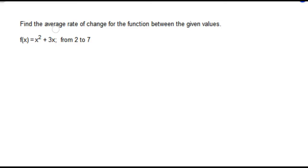On this question, we want to find the average rate of change for the function between the given values. The function we're working with is f(x) = x² + 3x, and we want to find the average rate of change from x = 2 to x = 7.